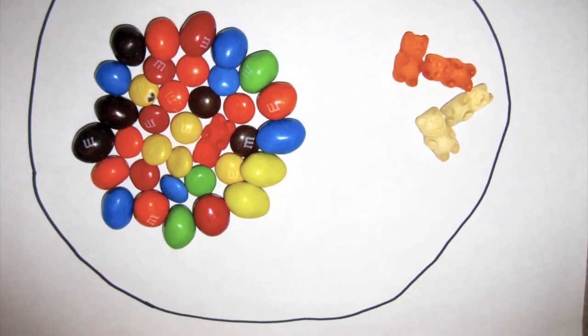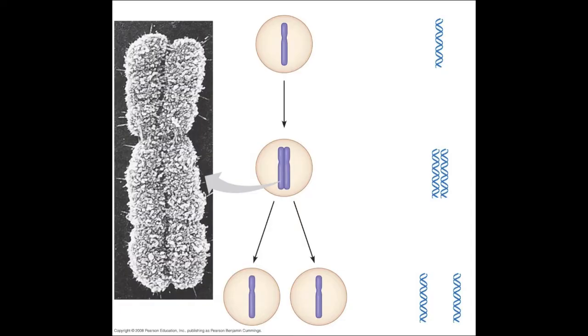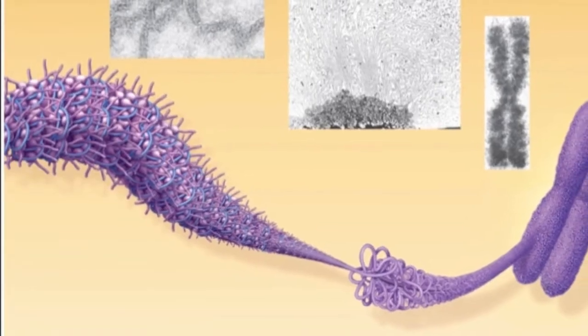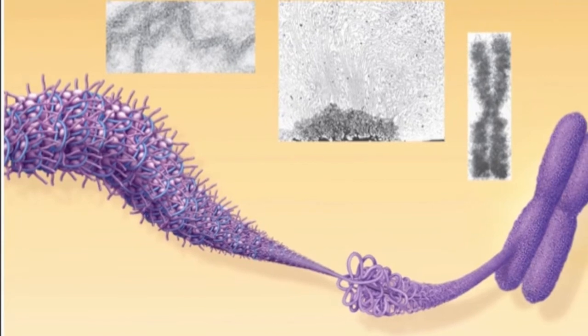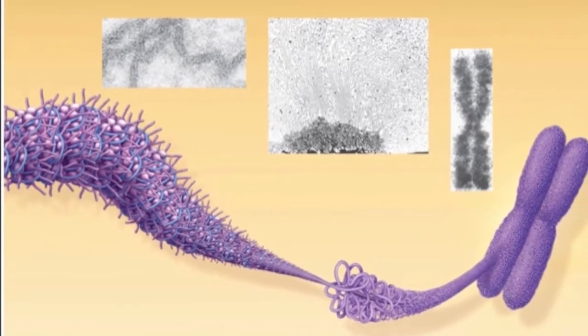Most of the cell's life is spent in interphase. The G2 stage is right before the cell heads into mitosis. At this point, the DNA has been replicated and centrosomes have been copied.